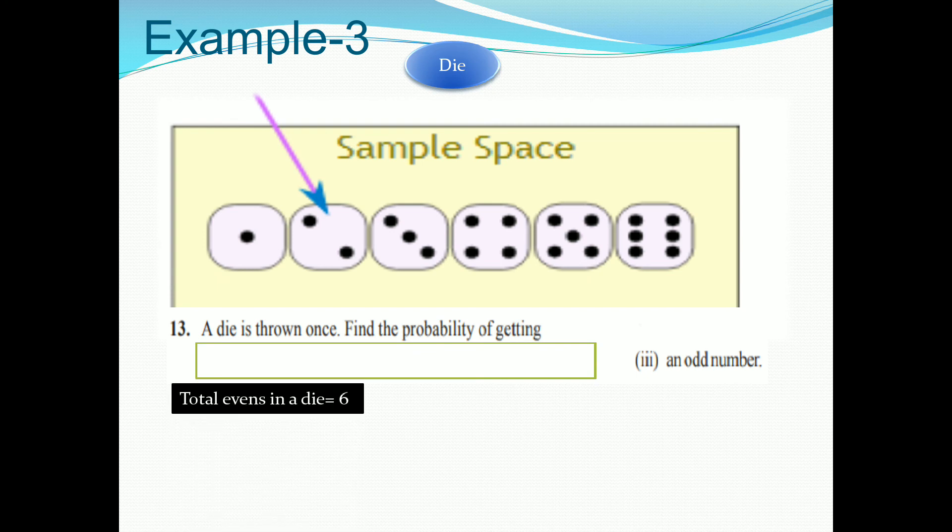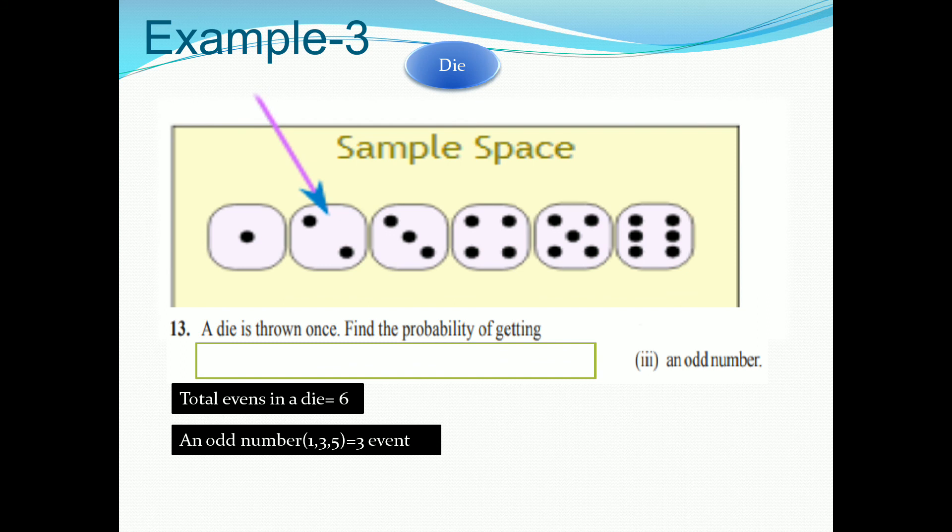Total event is 6. Odd numbers, that is 1, 3, 5. So here 3 events is there. Total event is 6 and favorable event is 3. So therefore, 3 upon 6. Here 3 indicate favorable event and 6 indicate total event.